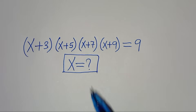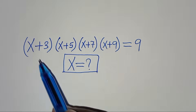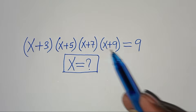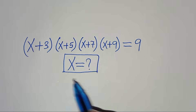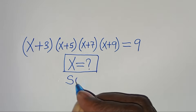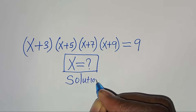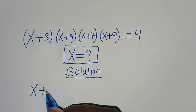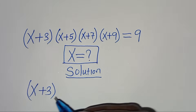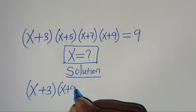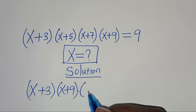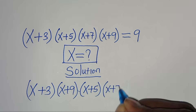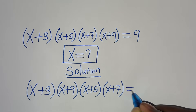Welcome. We need to solve this algebra problem: (x + 3)(x + 5)(x + 7)(x + 9) = 9. What is the value of x? The first step is to rearrange the factors by multiplying (x + 3) by (x + 9), then (x + 5) by (x + 7), keeping the product equal to 9.